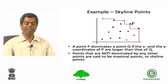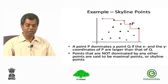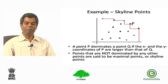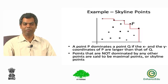So therefore we call them skyline points. Where do you find them useful? Well, you could imagine that the x-axis would correspond to maybe the cost of a ticket and the y-axis would correspond to the arrival or departure of a flight.